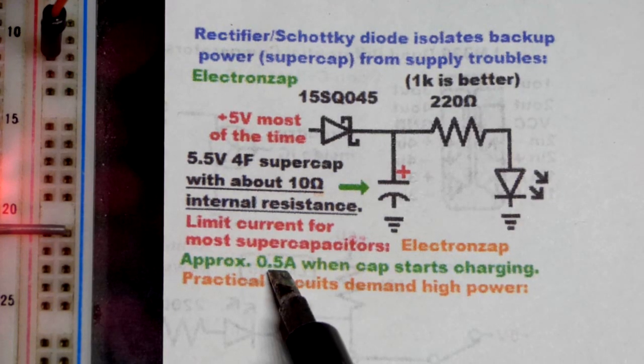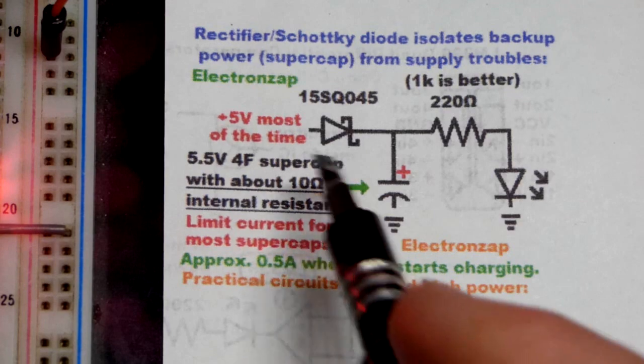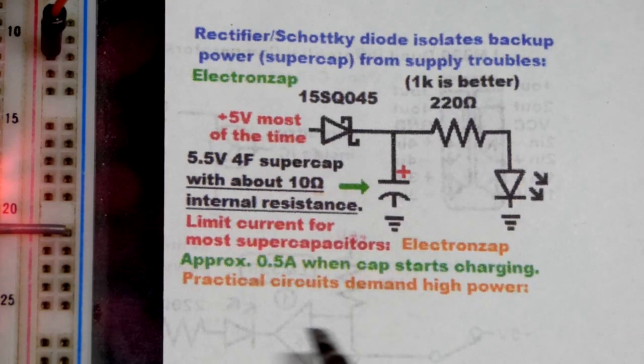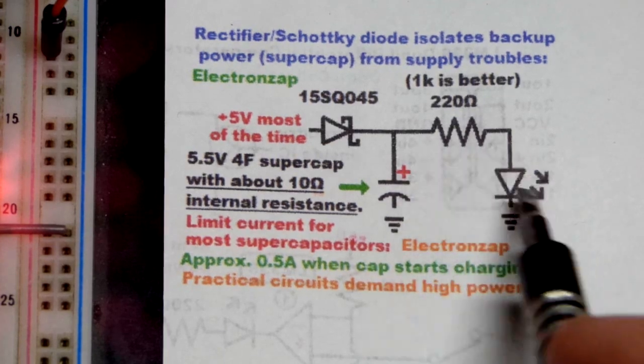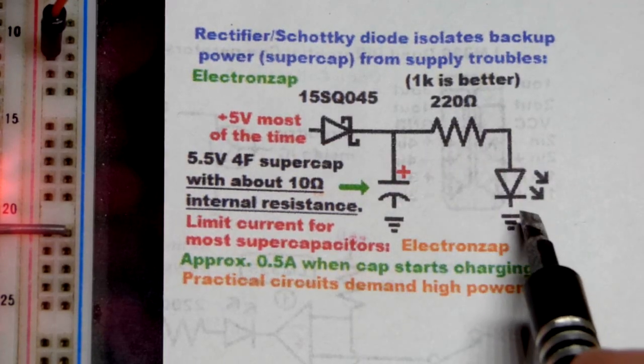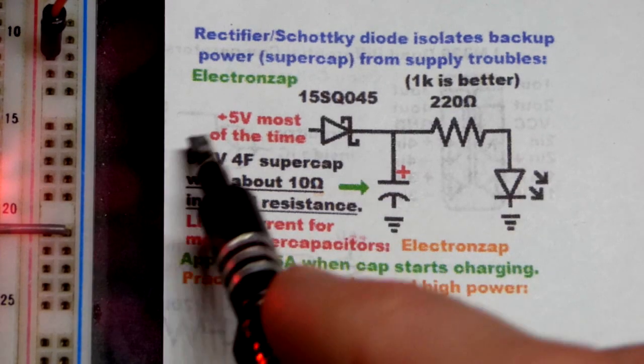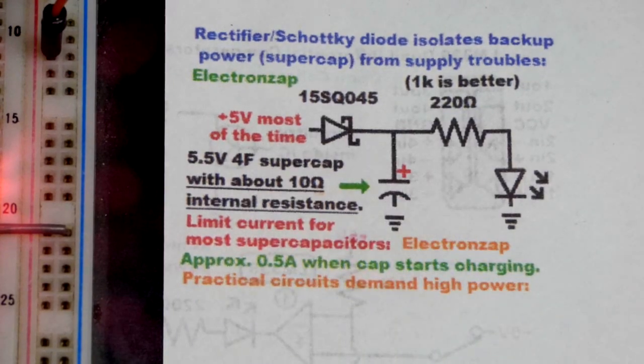It had about 0.5 amps that it needed right when we applied power. And so that's something to take into consideration. The load is going to see a lot less voltage across it when the capacitor is charging, if the power supply can't provide enough current.